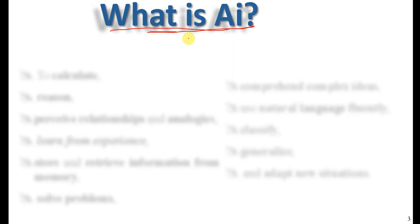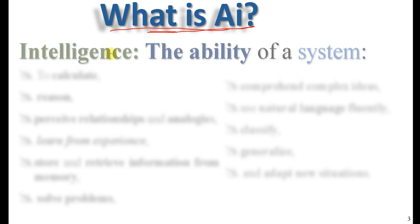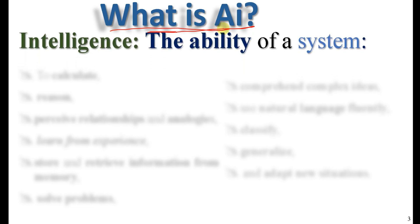Our first question is: what is AI, or artificial intelligence? Artificial intelligence — just as it indicates — is the power of things. Before we look at artificial intelligence, we need to understand what is artificial and what is intelligence. Intelligence is the ability of a system.